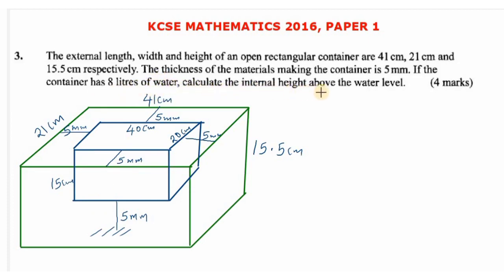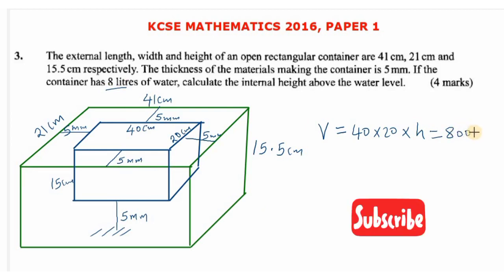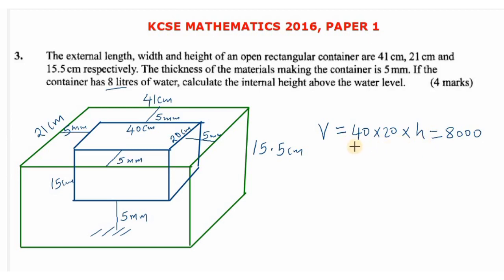We need to calculate the internal height above the water level, given that the container already has 8 liters of water. The internal part is a cuboid, so the volume equals length times width times height: 40 cm × 20 cm × h = 8 liters. Converting 8 liters to cubic centimeters: 8 liters = 8,000 cm³, since 1,000 cm³ is equivalent to 1 liter.